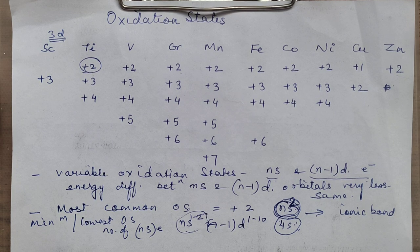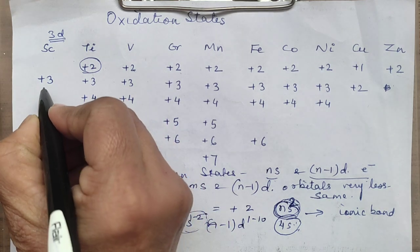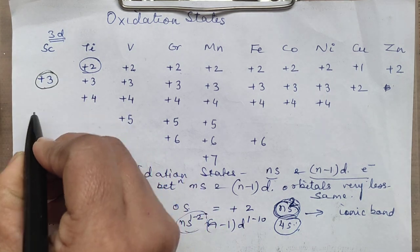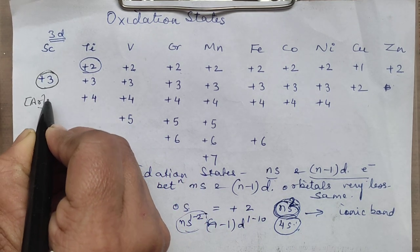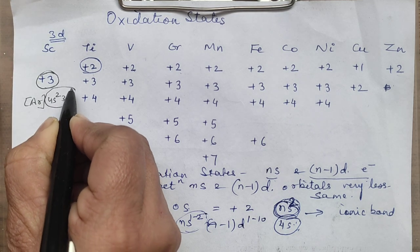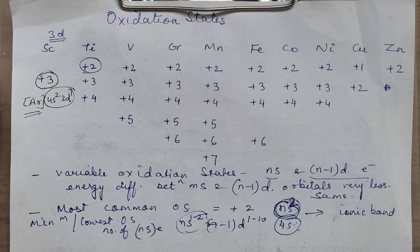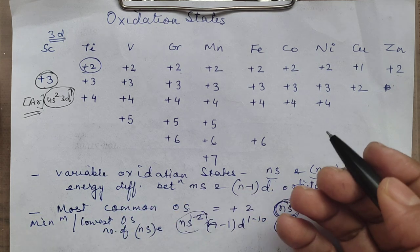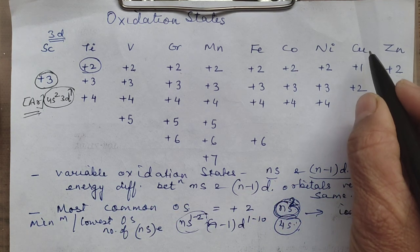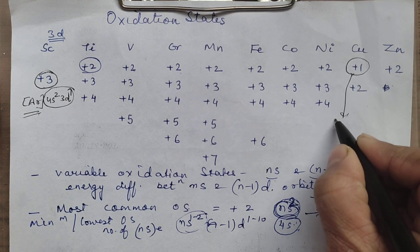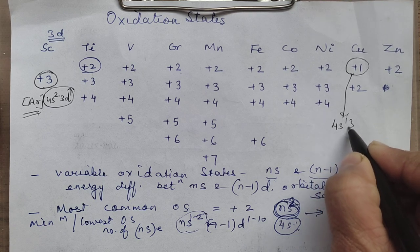Before discussing the higher oxidation state, notice one more thing: in the 3D series, scandium does not show the +2 oxidation state. The reason is scandium has the configuration of argon, 4s2 3d1. For it, losing all three electrons to gain the nearest noble gas configuration is easier, so it prefers losing all of them. Another exceptional case is copper — copper's configuration has 4s1 3d10 as the outermost.